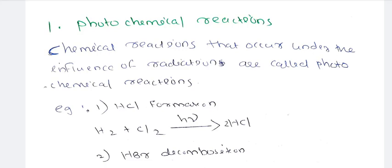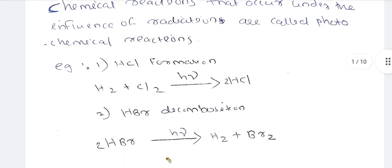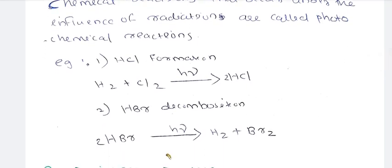We are talking about what a photochemical reaction is. For example, HCl formation: H2 + Cl2 with light absorption produces 2HCl. Next, HBr decomposition: 2HBr.